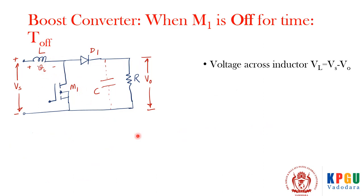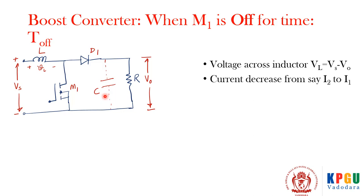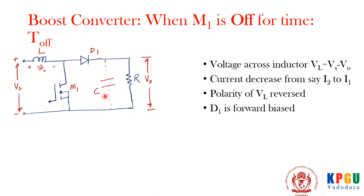When the switch is off (toff time), the diode becomes forward biased. The voltage across the inductor is now reduced to vL = Vs − V0. Because of this, the current starts to decrease — di/dt is negative — so the current falls from i2 back to i1, and the polarity of vL reverses compared to the previous case.